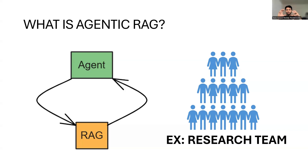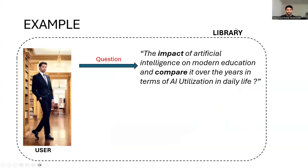By utilizing these agents, Agentic RAG delivers more comprehensive, accurate, and insightful answers. Let me give you an example so that you will understand it in a better way, and later we can go into the technical details. So this is one of the examples I've come up with. Imagine a user walks into a library and has a specific question.